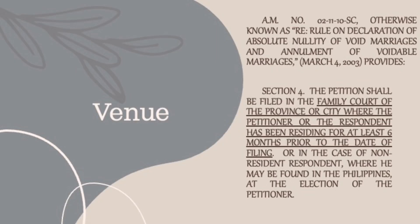Administrative Matter No. 02-11-10-SC, otherwise known as the Rule on Declaration of Absolute Nullity of Void Marriages and Annulment of Voidable Marriages, dated March 4, 2003, provides: the petition shall be filed in the family court of the province or city where the petitioner or the respondent has been residing for at least six months prior to the date of filing, or in the case of a non-resident respondent, where he may be found in the Philippines, at the election of the petitioner.